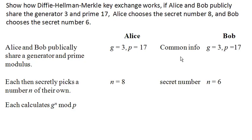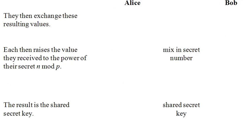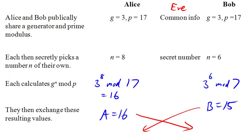So Bob just acquired—sorry, Alice just acquired Bob's secret number of 15, and Bob just acquired Alice's—sorry, not secret number—Alice's exchanging number of 16. I don't know what it's actually called. We'll call it exchanging number. So Alice sent her number of 16 to Bob, Bob sent his number of 15 to Alice. So now they each have the other's number.